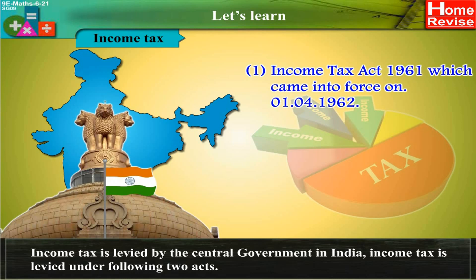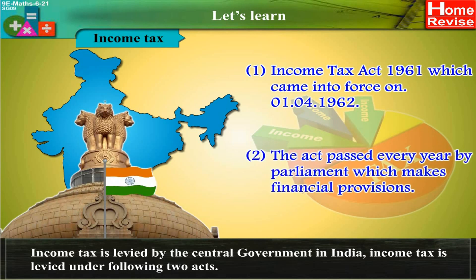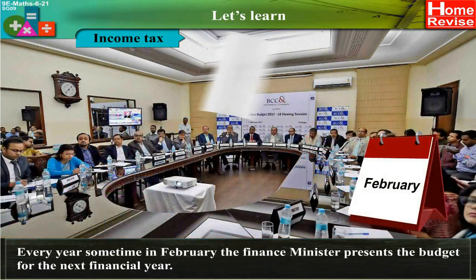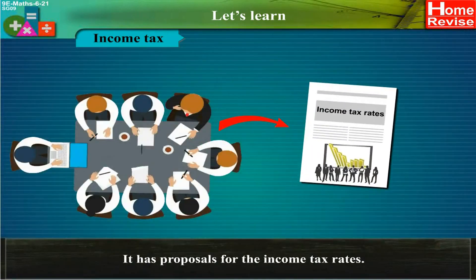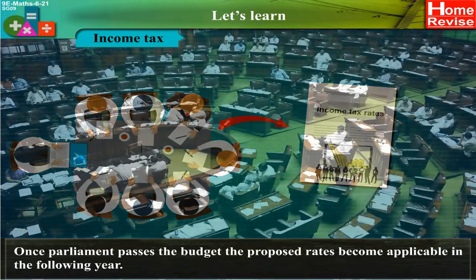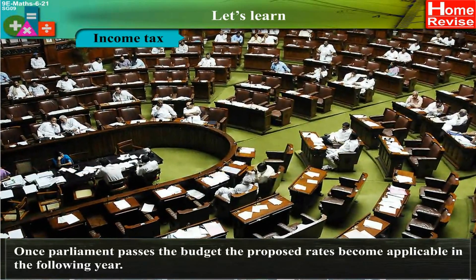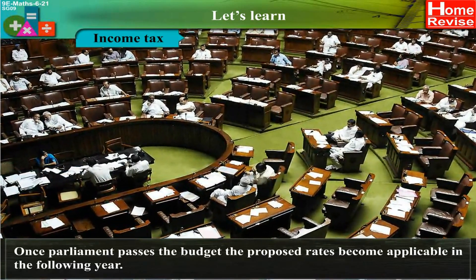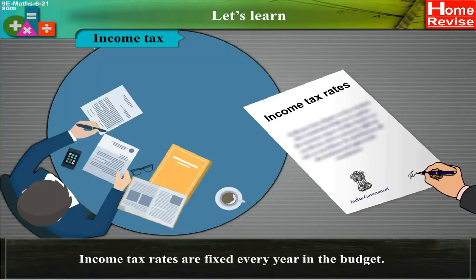Income Tax Act 1961, which came into force on 1st April 1962. The Act passed every year by Parliament makes financial provisions. Every year sometime in February, the Finance Minister presents the budget for the next financial year. It has proposals for the income tax rates. Once Parliament passes the budget, the proposed rates become applicable in the following year. Income tax rates are fixed every year in the budget.